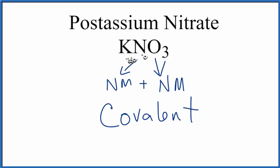While the overall bond between the potassium and the nitrate is an ionic bond, the bond between the nitrogen and oxygen atoms in the nitrate ion is going to be covalent. But overall, the bond between the potassium and the nitrate is ionic, so we consider potassium nitrate (KNO3) to be an ionic compound.